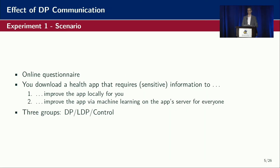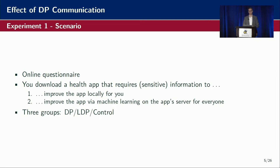We conducted two experiments. The first was an online questionnaire where participants were placed in a scenario: you just downloaded a health app called Orange Health, and this app requires certain sensitive information to improve the app locally for you, to recommend things, and to improve the app globally for all users — for example, for machine learning applications. We had three conditions: one exposed to differential privacy, one to local differential privacy, and a control group. This is all in line with the original study, and we copied the questionnaire basically verbatim.